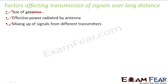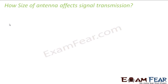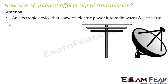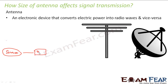Just telling these three things doesn't make much sense yet. You don't understand how the size of an antenna matters or how the power radiated matters. For that, let us discuss each factor in detail. First, let us understand what is an antenna. An antenna is an electronic device that converts electric power into radio waves and vice versa. When you look at the basic structure of a communication system, we have a source, then a transmitter, then a channel, then a receiver, and then the destination.